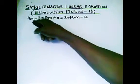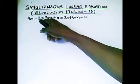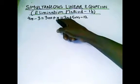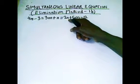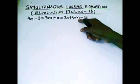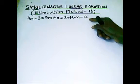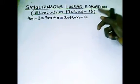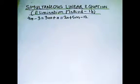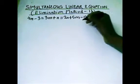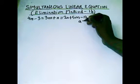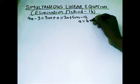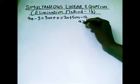On the board we have: 4m minus 3 equals 3m plus n equals 2n plus 5m minus 12. If you take a look at this, this particular question is quite different from the previous ones we've been solving. So how do we approach this question? Let me say this before we proceed.